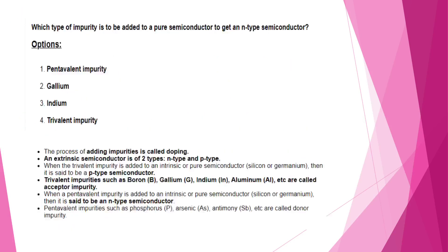Now let's look at the question: Which type of impurity is to be added to a pure semiconductor to get an N-type semiconductor? Looking at the options — pentavalent, gallium, indium, trivalent — the answer is pentavalent impurity.